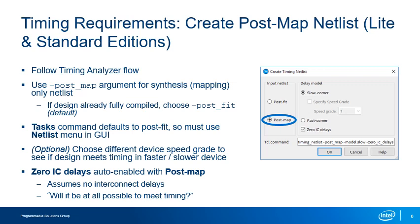With a slow corner delay model, you can also choose a device speed grade to use for the analysis. By default, if this option is enabled, the speed grade of the currently targeted device is used. Change the speed grade to see if a design that is not meeting timing could meet timing in a faster device, or to see if a design already meeting timing could still meet timing in a slower, potentially less expensive device. With the post-map netlist type selected, the zero interconnect delays option is turned on automatically. Since there is no routing yet, the timing analyzer assumes there are no delays on any interconnect in the device, to see if it will be at all possible to meet the timing requirements specified by the constraints.